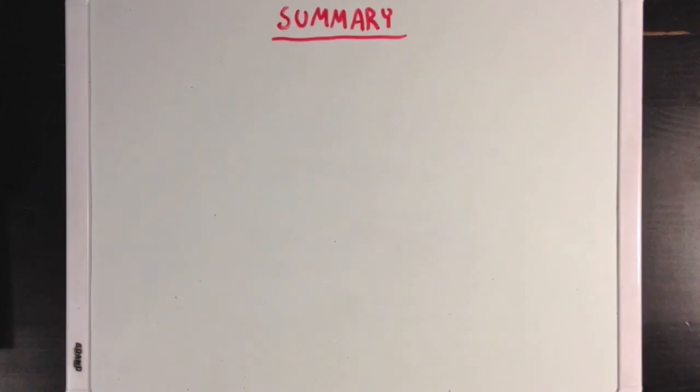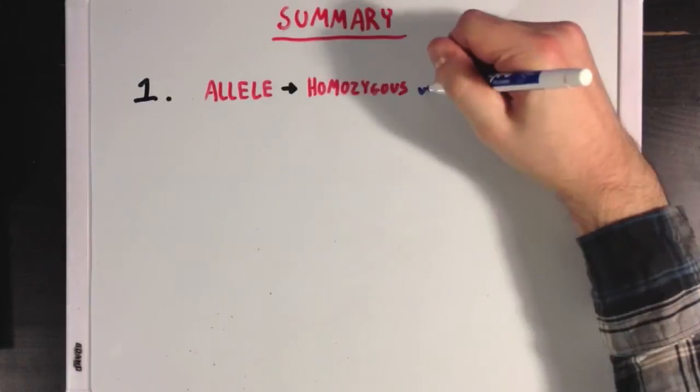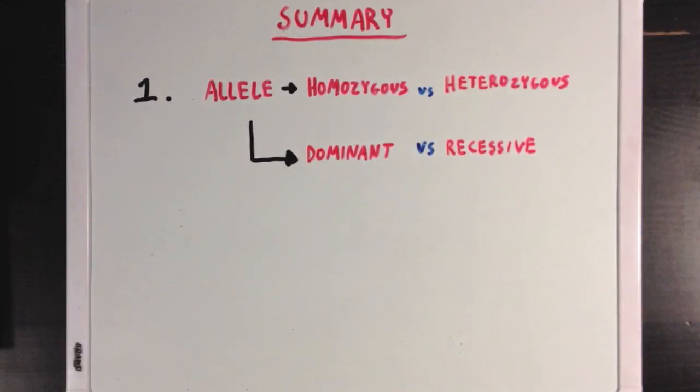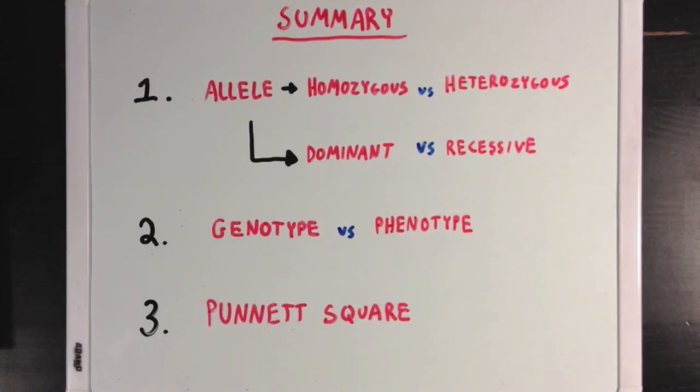So what did we learn? Well, first we learned what an allele is, and the difference between homozygous and heterozygous, as well as the difference between dominant and recessive traits in relation to alleles. Second, we learned about the difference between genotype and phenotype, and how the genotype refers to a person's DNA, while a phenotype refers to the physical traits that the DNA codes for. And finally, we learned about how we can use a Punnett square to determine how different alleles will be inherited from two parents.